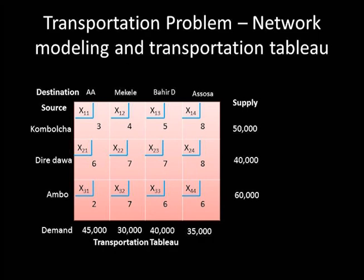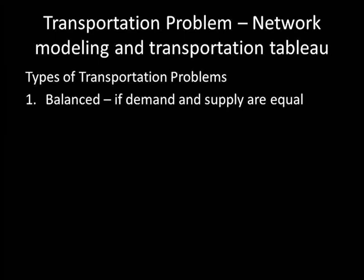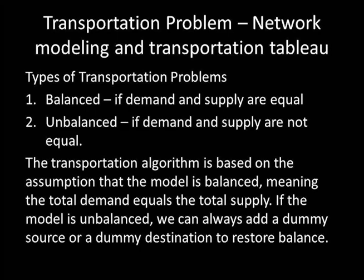It is this tableau we use in solving the transportation problem using the transportation simplex method. At the end, let's look at the types of transportation problems. There are two types. If demand and supply are equal, the problem is called a balanced transportation problem. If demand and supply are not equal, it is called an unbalanced transportation problem. The transportation algorithm assumes the model is balanced. If it is unbalanced, we can add a dummy source with zero supply or a dummy destination with zero demand to restore balance. We will discuss this in detail when solving unbalanced problems. That's all for this part — see you later, please subscribe, like, and share.